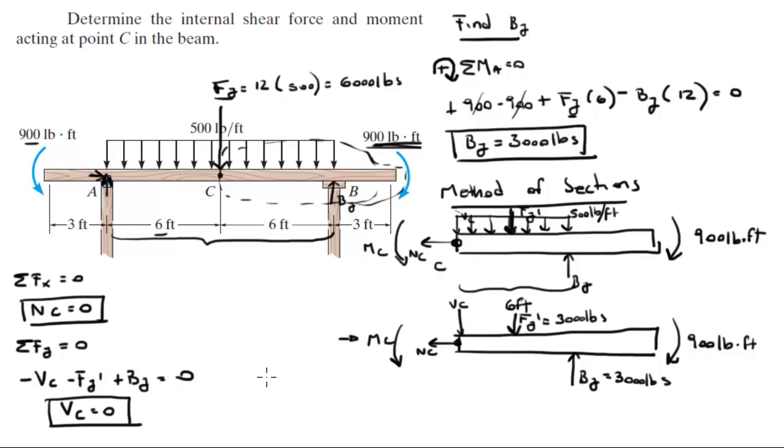And last but not least, assuming counterclockwise is positive, sum of the moments at C is equal to 0. So MC minus FY' times 3 feet because from C to FY' there's 3 feet. It's right in the middle of that distributed load that we cut in half before. Plus BY times 6 feet because BY is 6 feet from C. Minus the moment at the far right which is 900 and it is equal to 0. So you get that the moment is equal to negative 8,100 pound-feet, which means it's just going backwards from what we drew it.